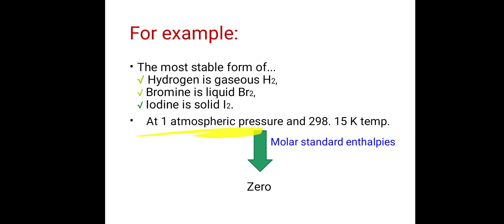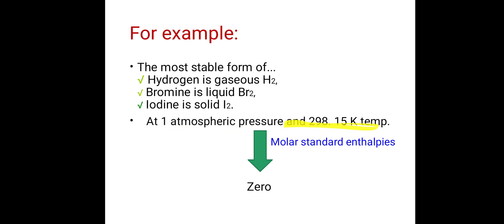At 1 atmospheric pressure and 298.15 Kelvin temperature, their molar enthalpies are 0. When these elements like hydrogen, bromine, and iodine are in their most stable form, and the pressure is 1 atmospheric and temperature is 298.15 Kelvin, at that time their standard molar enthalpy is considered as 0.